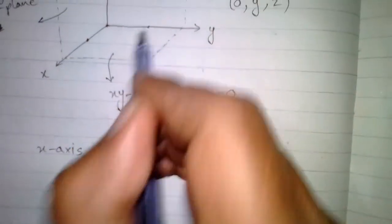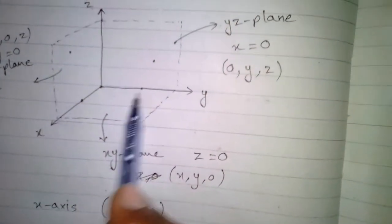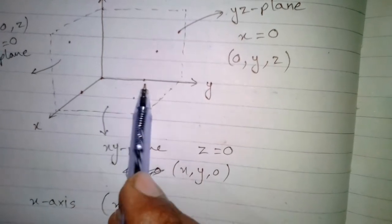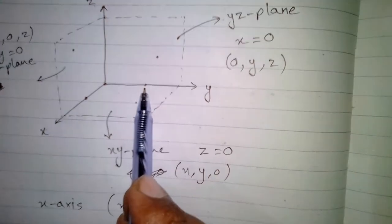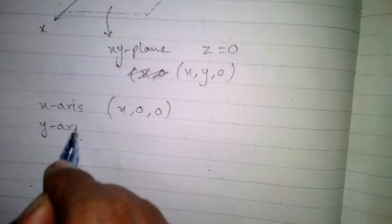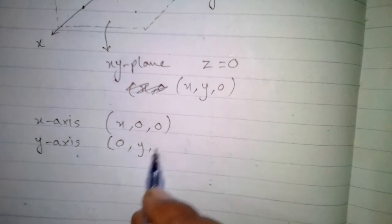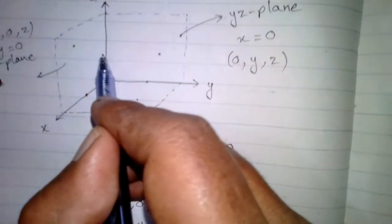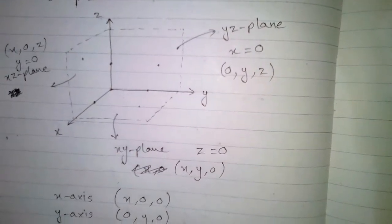If we take a point on the Y axis, the Y component may be zero or nonzero, but the X component and Z component are always zero. So on the Y axis, the point is of the form (0, y, 0).